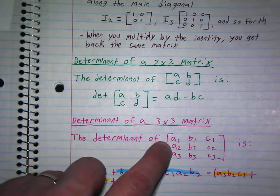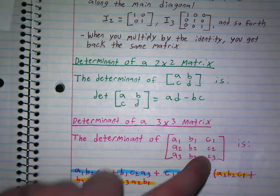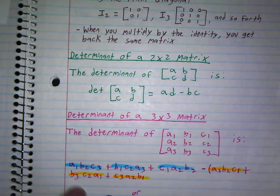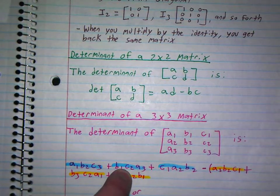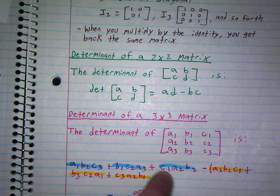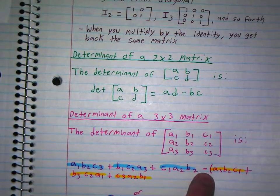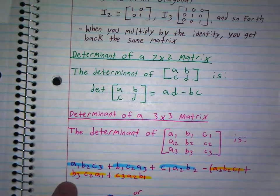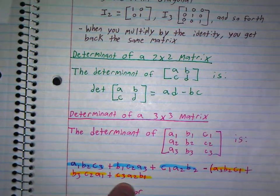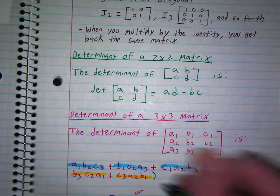If you have a1, a2, a3, b1, b2, b3, c1, c2, c3, then the formula is a1, b2, c3 plus b1 times c2 times a3 plus c1 times a2 times b2. I usually add all these and then subtract. But it's a3 times b2 times c1 plus b3, c2, a1 plus c3, a2, b1, and you subtract all of that.